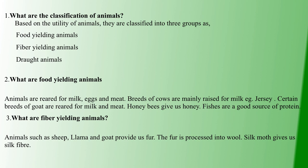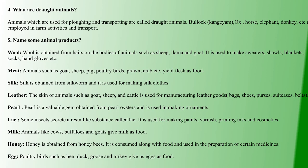Third question: what are fiber yielding animals? Fiber yielding animals include sheep, llama, and goat — their fur and skin are used. We process the wool from these animals. Also, the moth provides silk fiber.